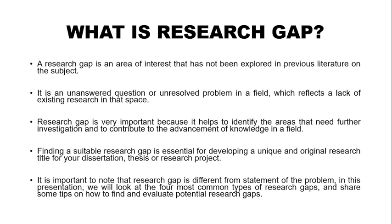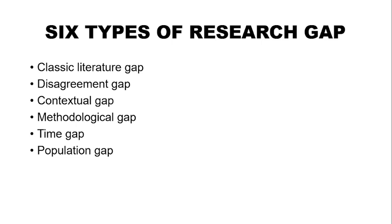In this presentation we will look at the six types of research gap and also share some tips on how to identify your research gap. The six types are: one, classic literature gap; two, disagreement gap; three, contextual gap; four, methodological gap; five, time gap; and six, population gap.